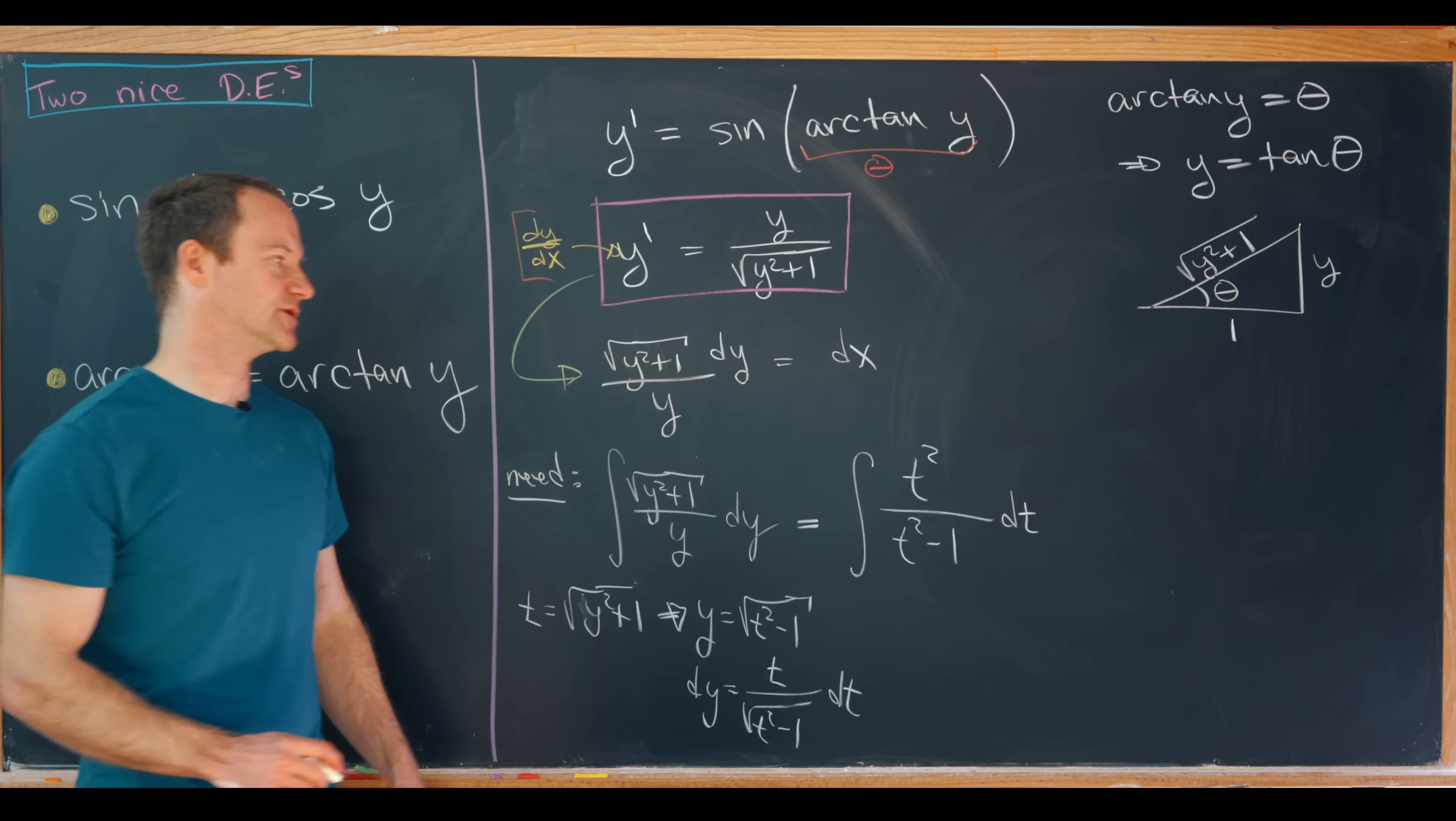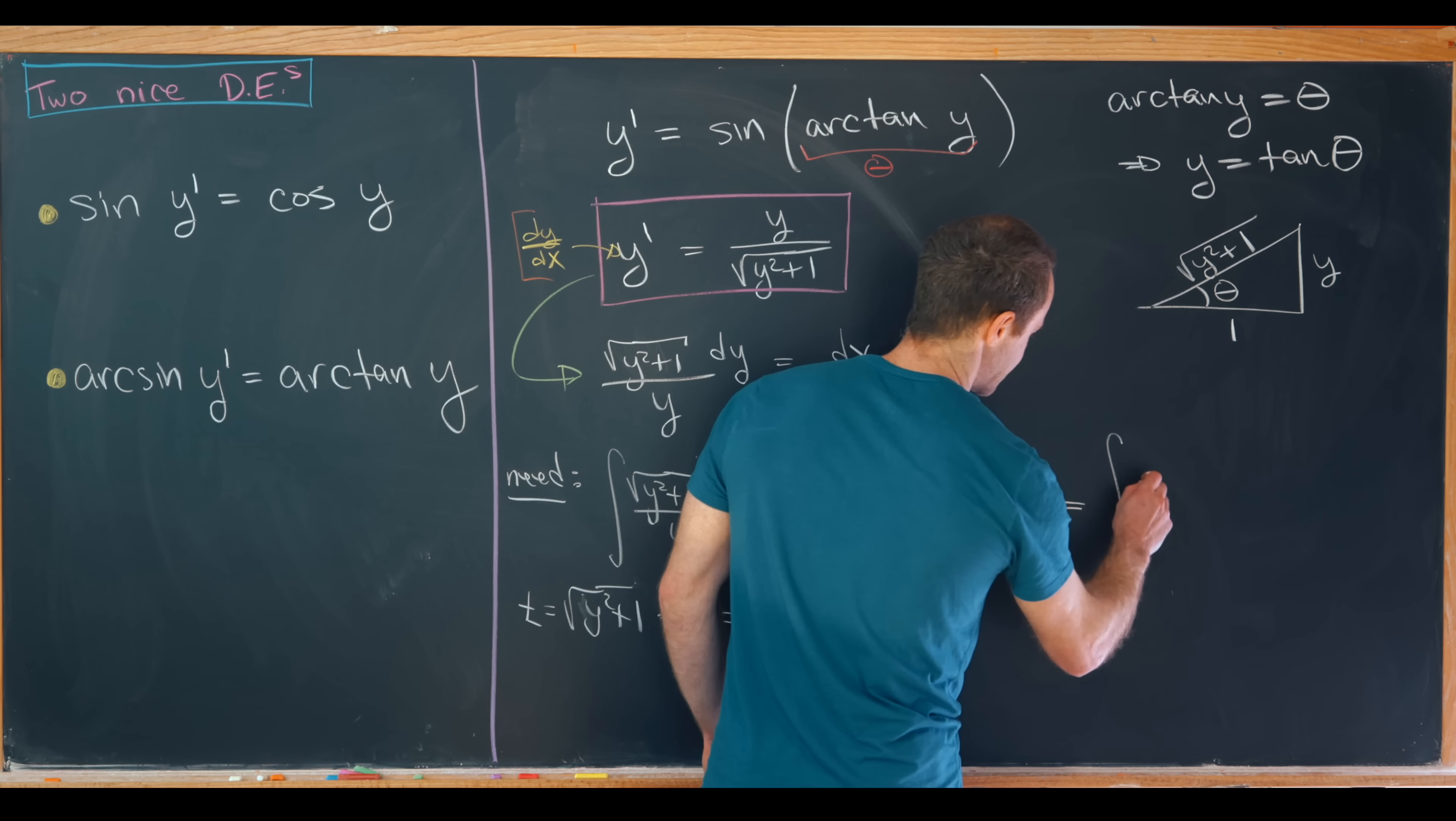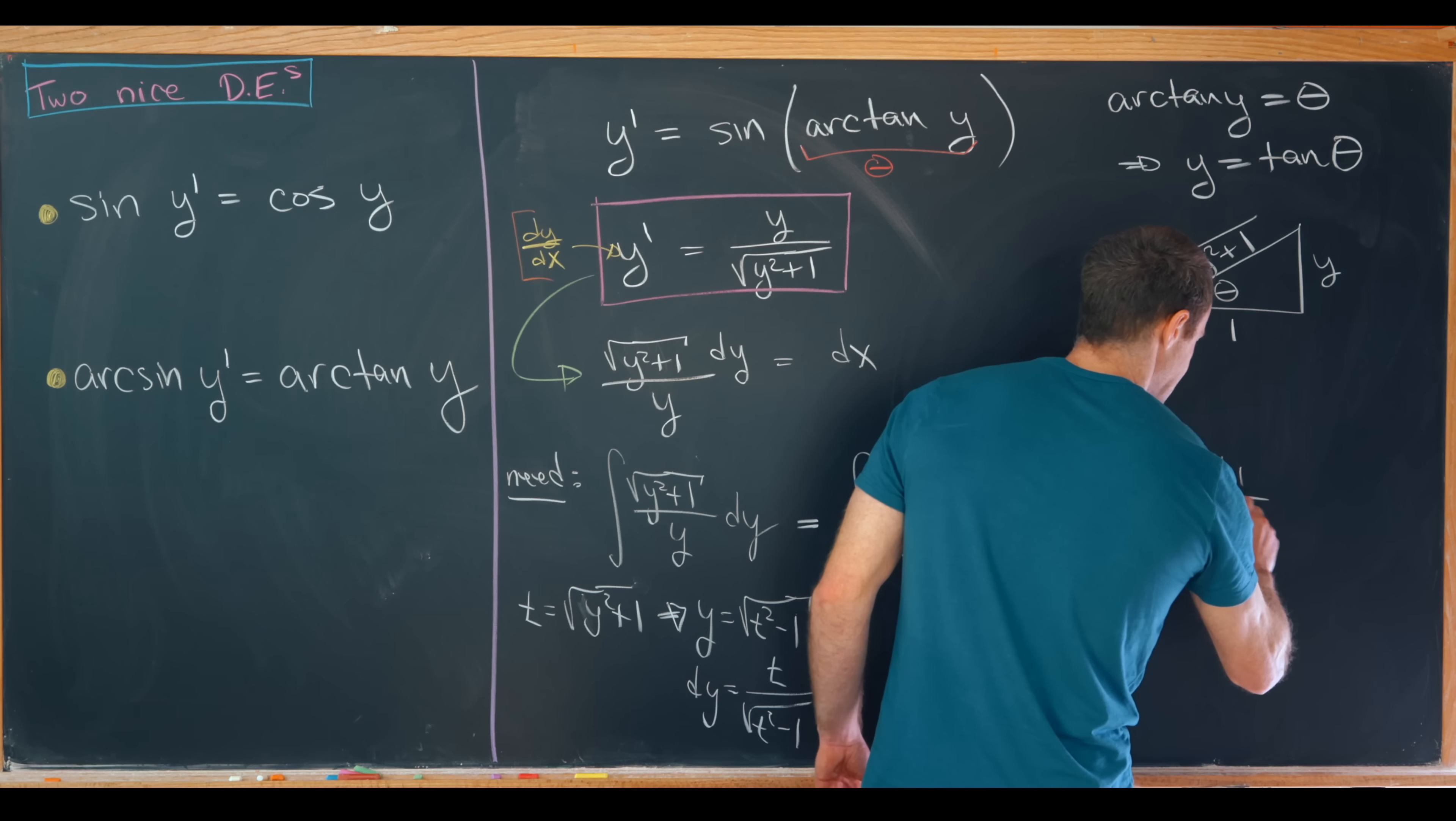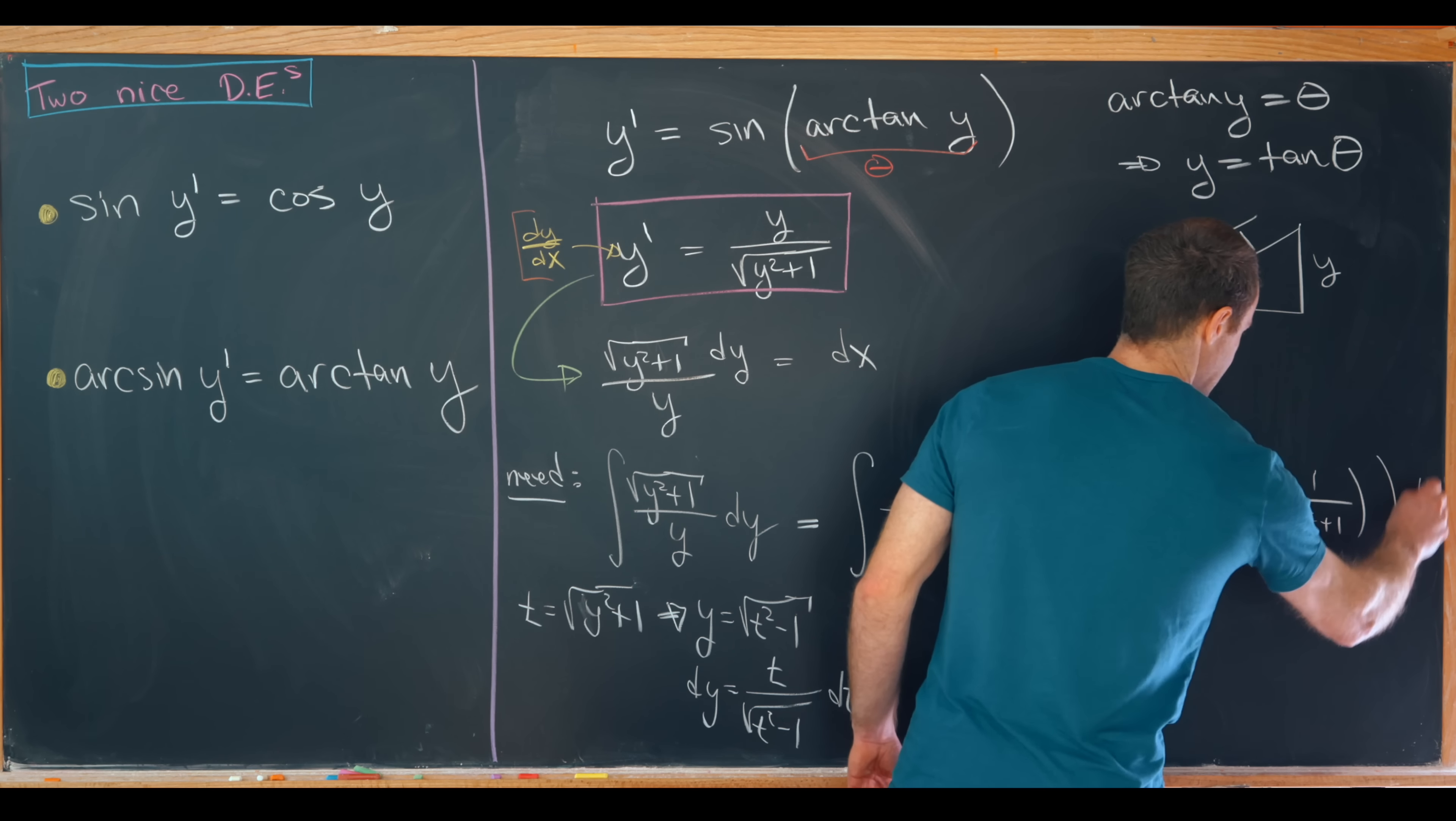And our strategy from here will be to use a partial fractions decomposition. So that'll leave us with something like this. We'll have 1 plus 1 half times the quantity 1 over t minus 1 minus 1 over t plus 1 dt.